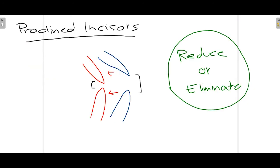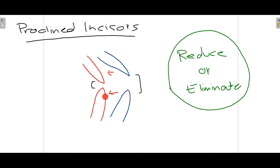The third part of treatment applies when the incisors are proclined. As shown in this diagram, the blue incisors are proclined. By using orthodontic treatment, fixed or removable appliances, the incisors can be moved back to their normal position, eliminating or reducing the OpenBite. Different treatment modalities are combined to reduce and finally achieve elimination of the OpenBite.